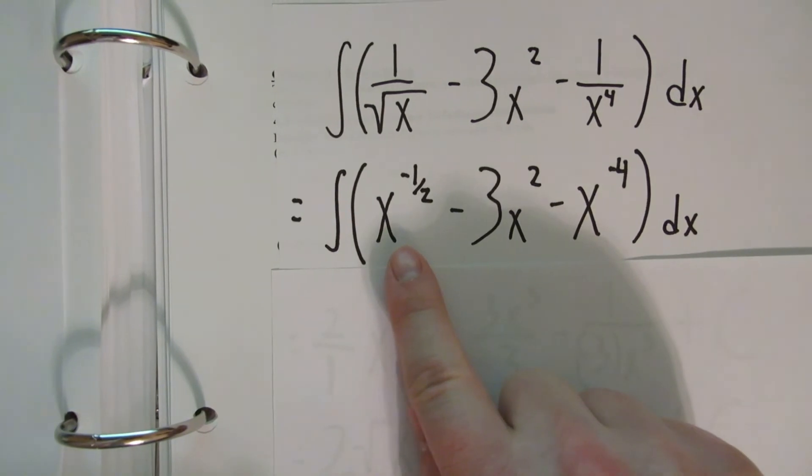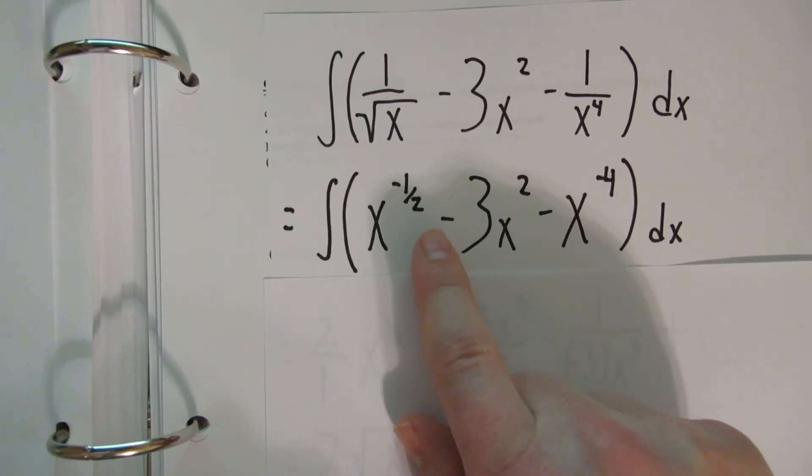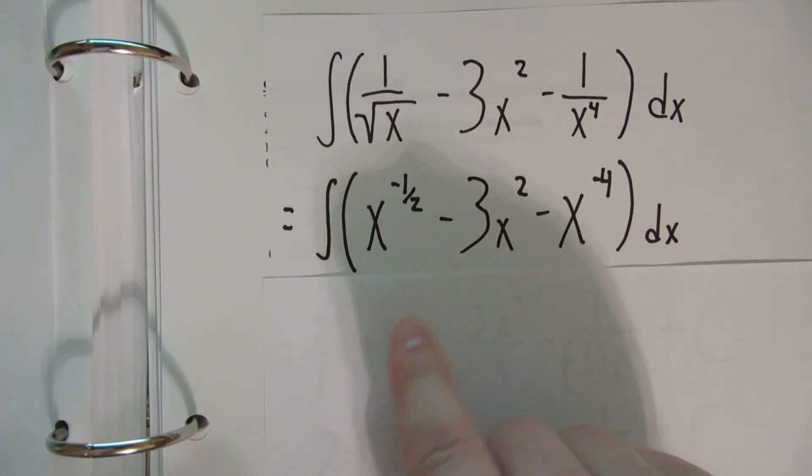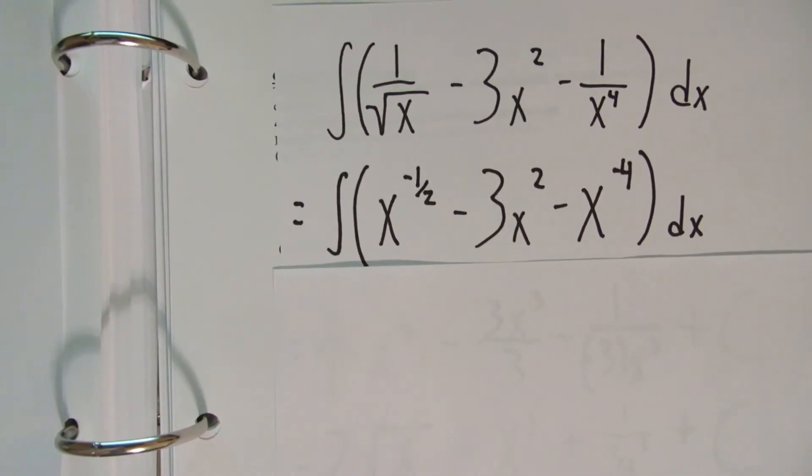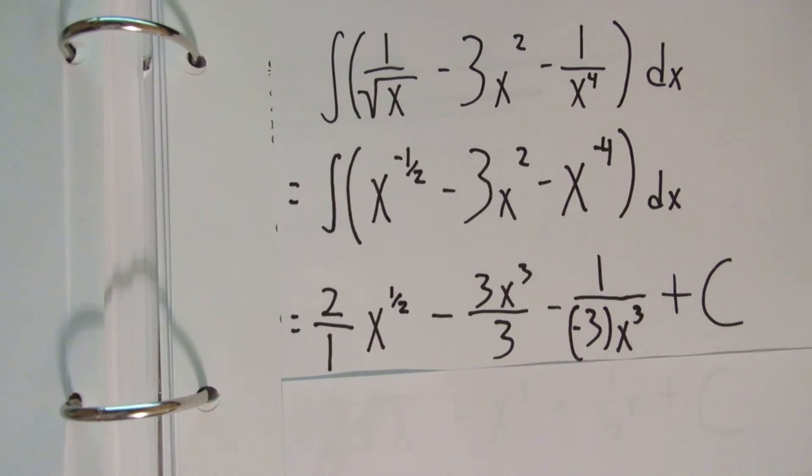So in raising x to the negative one-half will become x to the one-half divided by one-half. And then just do the same with all three of these. Raise the power and then divide.